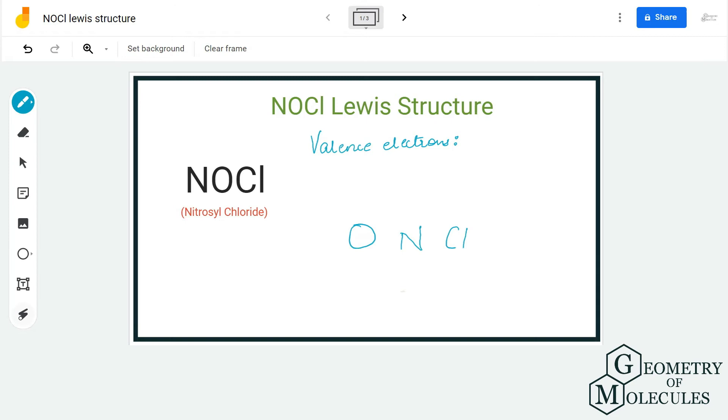Hi guys, welcome back to our channel. In today's video, we are going to determine the Lewis structure for NOCl, which also has a chemical name of nitrosyl oxide. To determine its Lewis structure, we first need to know the total number of valence electrons for this molecule.